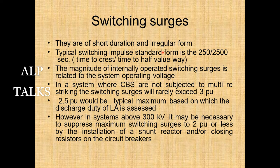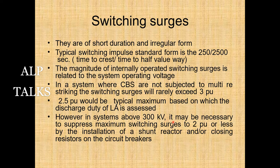Switching surges are short duration and of irregular form; the standard switching impulse form is 250/2500 microseconds (time to crest and time to half-value). Magnitudes of internally generated switching surges are related to system operating voltage. In systems where circuit breakers are not subjected to multiple restriking, switching surges rarely exceed 3 per unit — 2.5 per unit would be a typical maximum. In systems above 300 kV, it may be necessary to suppress maximum switching surges to 2 per unit or less by installing current reactors or closing resistors on the circuit breaker.